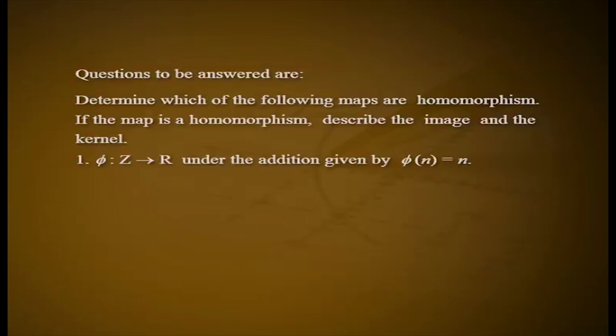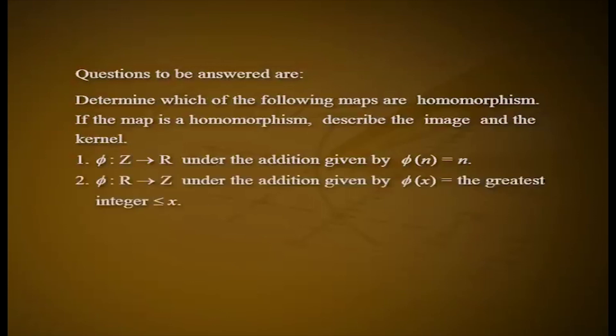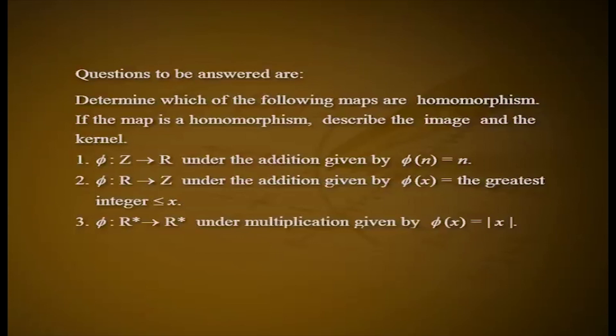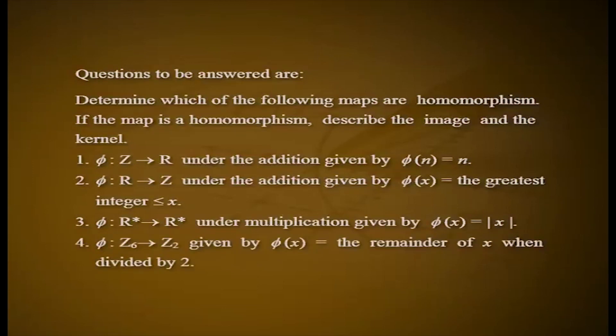Question 1: phi from Z to R under addition given by phi of n equals n. Question 2: phi from R to Z under addition given by phi of x equals floor of x, the greatest integer less than or equal to x. Question 3: phi from R* to R* under multiplication given by phi of x equals |x|. Question 4: phi from Z6 to Z2 given by phi of x equals the remainder of x when divided by 2.